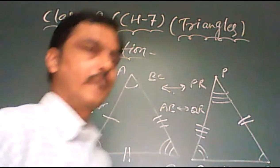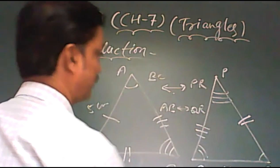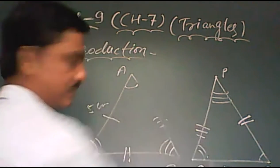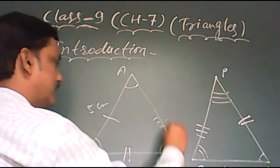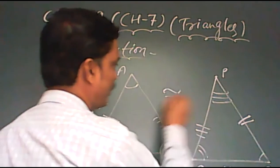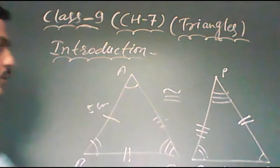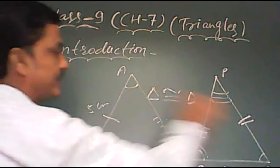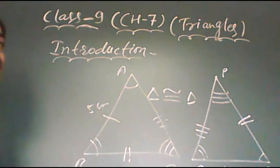Now, when we talk about the congruence, what is the meaning? How we write symbolically for congruence? That is the symbol we use for congruence. When two triangles are congruent, we can write triangle ABC congruent triangle BQR.